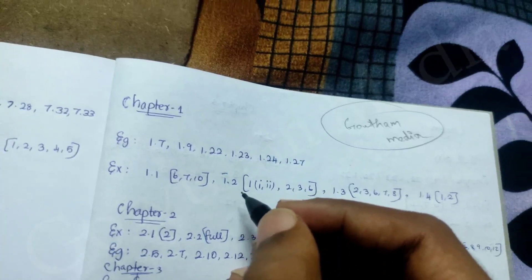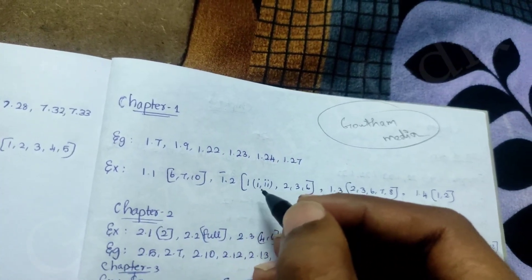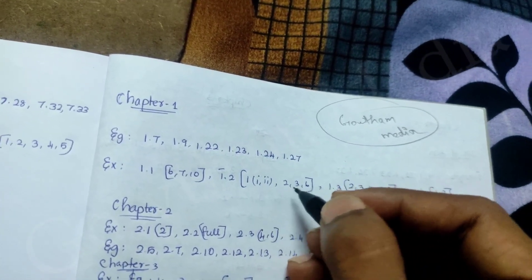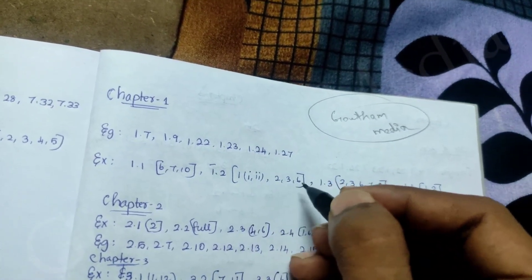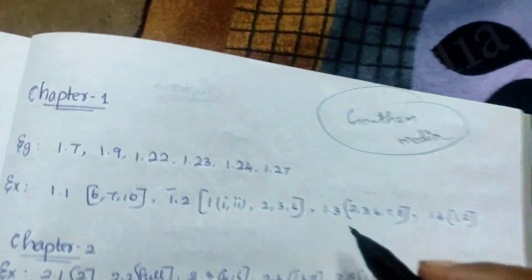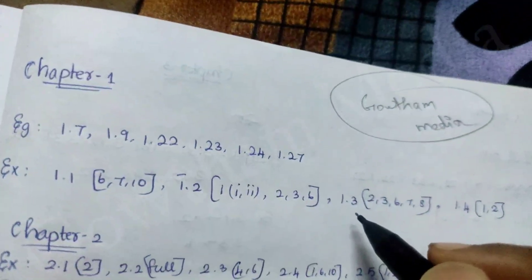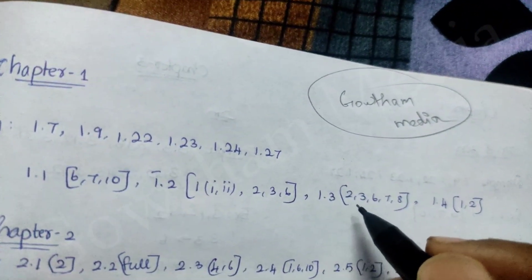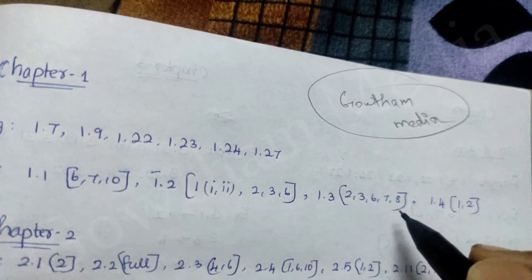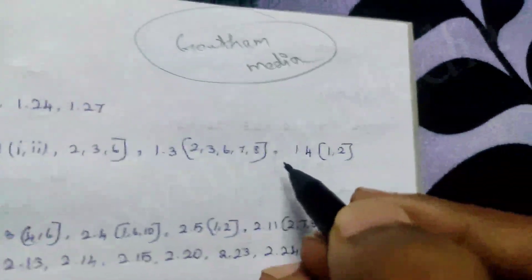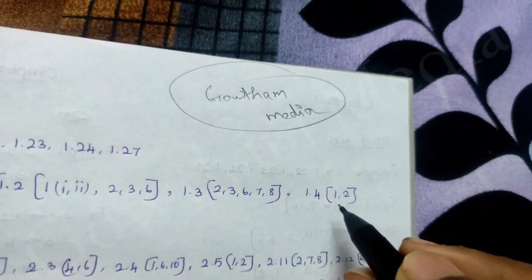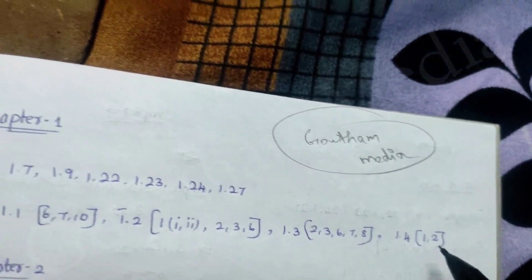1.2 — 1st, 2nd, 3rd, 6th. 1.3 — 2nd sum, 3rd sum, 6th sum, 7th sum, 8th sum. 1.4 — 1st sum, 2nd sum. So note that.